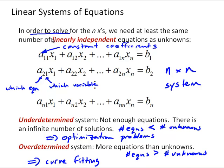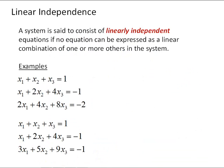So let's get back to this idea of linear independence. A system is said to consist of linearly independent equations if no equation can be expressed as a linear combination of one or more others in the system.